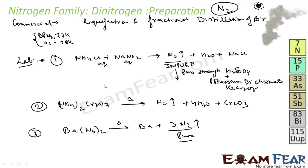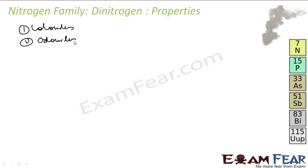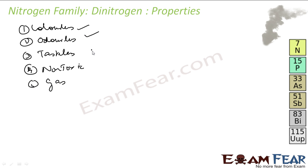So there are different ways to prepare Nitrogen. Commercially, fractional distillation of air is cheaper at large scale. In the lab, all three methods are used. Once prepared, let's look at the properties of Dinitrogen. It is colorless, odorless, tasteless, and non-toxic gas.